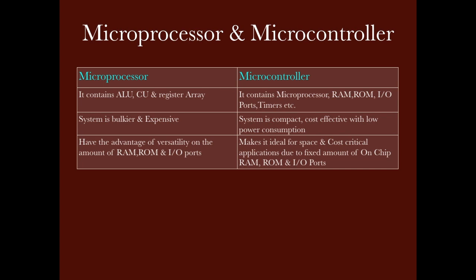The advantage of the microprocessor is that because RAM, ROM, and I/O ports are externally connected, its advantage is versatility — we can increase the amount of memory or the number of I/O ports compared to the microcontroller. The microcontroller, because everything is on-chip, has fixed RAM, ROM, and I/O ports. We have a fixed amount of memory and a fixed number of I/O ports in the microcontroller.